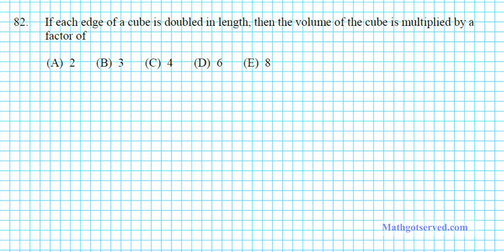Alright, let's take a look at problem 82. It says, if each edge of a cube is doubled in length, then the volume of the cube is multiplied by a factor of. Now, before we do this, let's go ahead and take a look at our formulas real quick.